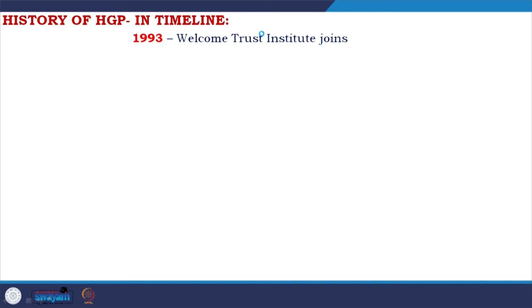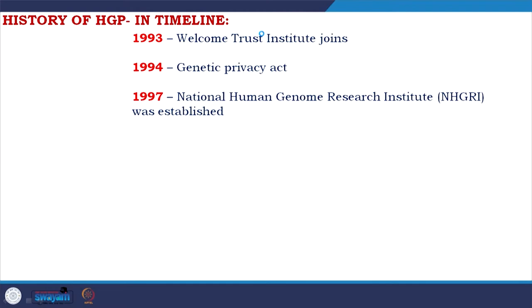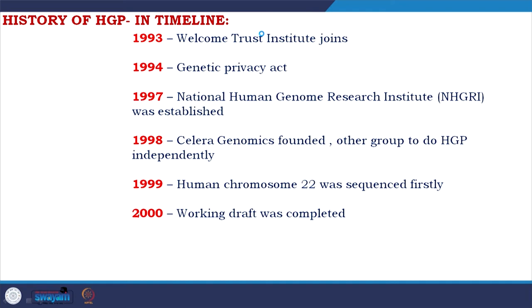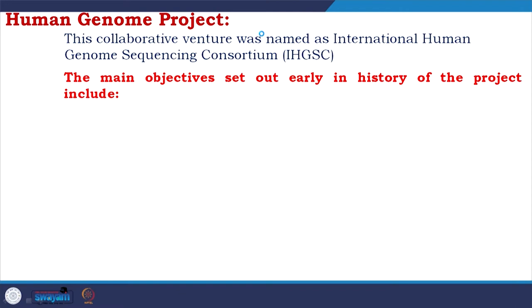In 1993, the Wellcome Trust Institute joined. In 1994, a Genetic Privacy Act was developed, anticipating potential misuse of the data. In 1997, the National Human Genome Research Institute (NHGRI) was established. In 1998, Celera Genomics — a private initiative by Craig Venter — began independently. In 1999, human chromosome 22 was sequenced, the first entire chromosome sequencing. A working draft was completed in 2000, analysis was published in 2001, and the Human Genome Project was completed in 2003.